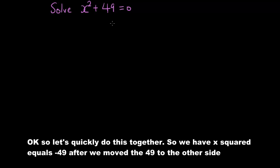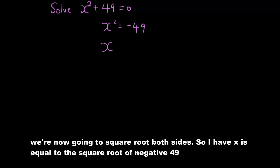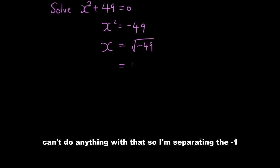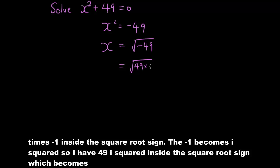So let's quickly do this together. So we have x squared equals negative 49. After we move the 49 to the other side, we're going to now square root both sides. So I have x equals the square root of negative 49. Can't do anything with that. So I'm separating the negative from the 49. So it's 49 times negative 1 inside the square root sign. The negative one becomes i squared.